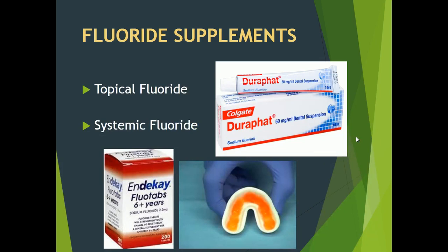Fluoride supplements are available in the form of topical fluoride or systemic fluoride. Fluoride tablets are given to children above the age of 6 years — this is an example of systemic fluoride. Colgate Durafat is an example of topical fluoride, which is loaded into a special tray and the patient is advised to insert the tray into the mouth for a recommended period of time. Topical fluoride can also be used at home or at professional clinics.